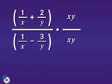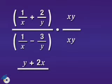One over x times xy will cross cancel the x's and we're left with y. Two over y times xy will divide away the y's and that leaves us with two x.